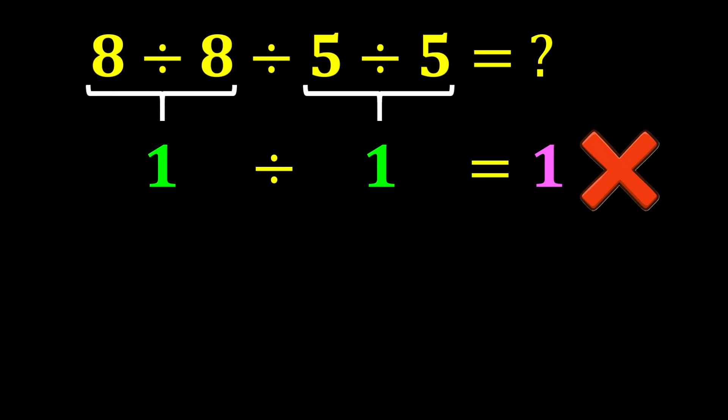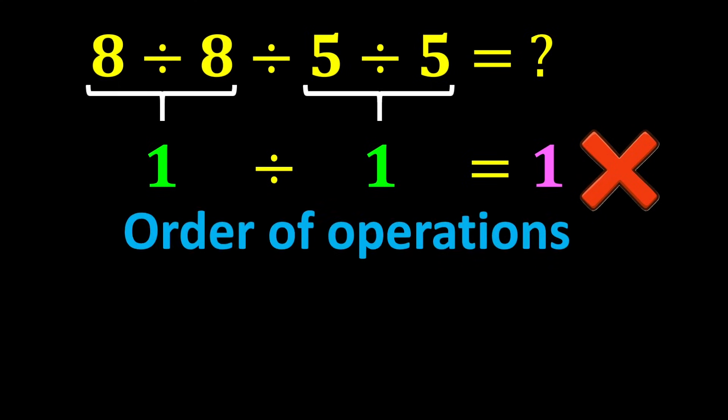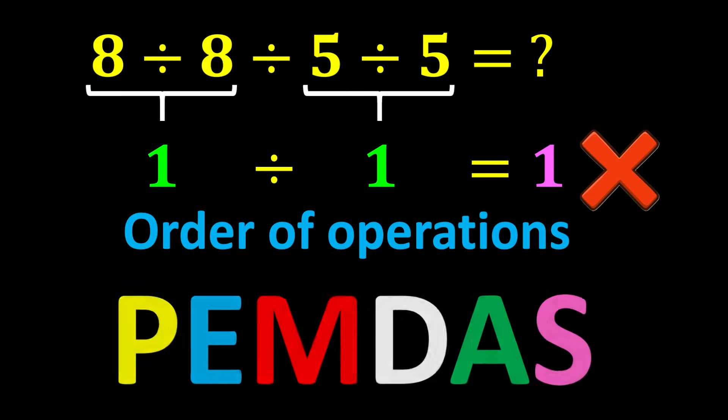This rule is called the order of operations. The order of operations tells us that when we face a mathematical expression, we cannot start solving it from anywhere we like. Instead, we must follow a specific order called the correct order of operations, known by the acronym PEMDAS.